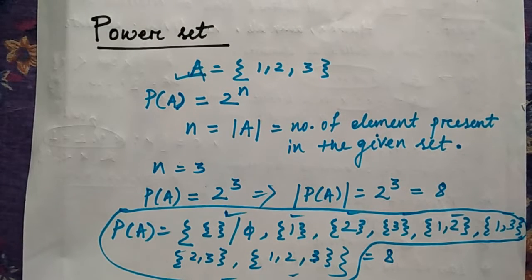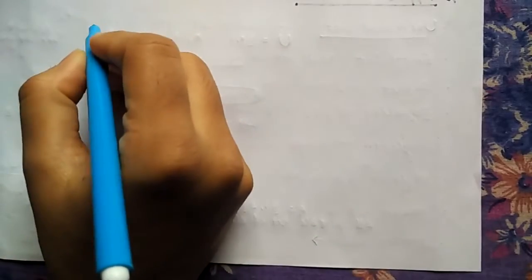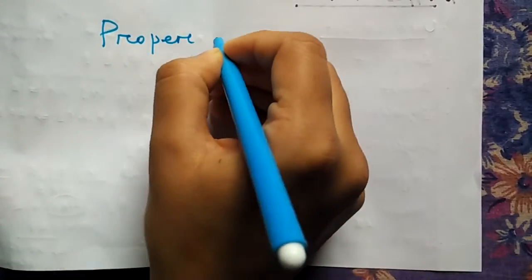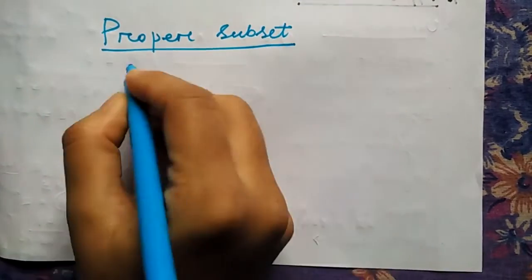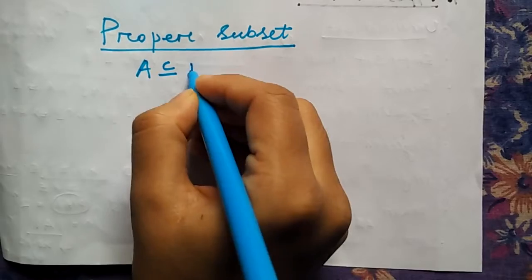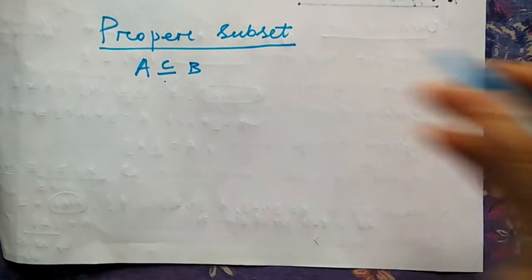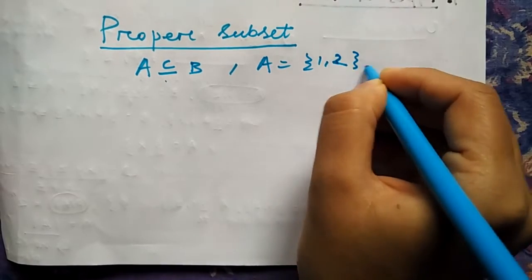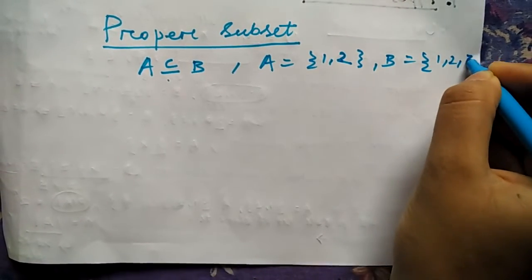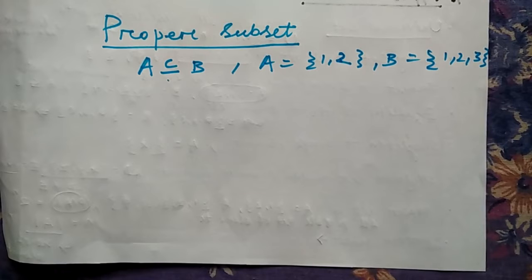Then we'll see another concept, that is proper subset. I told you about the subset thing. Subset is A is a subset of, this is the symbol. So if A is {1, 2} and B is {1, 2, 3}, then A is a subset of B.